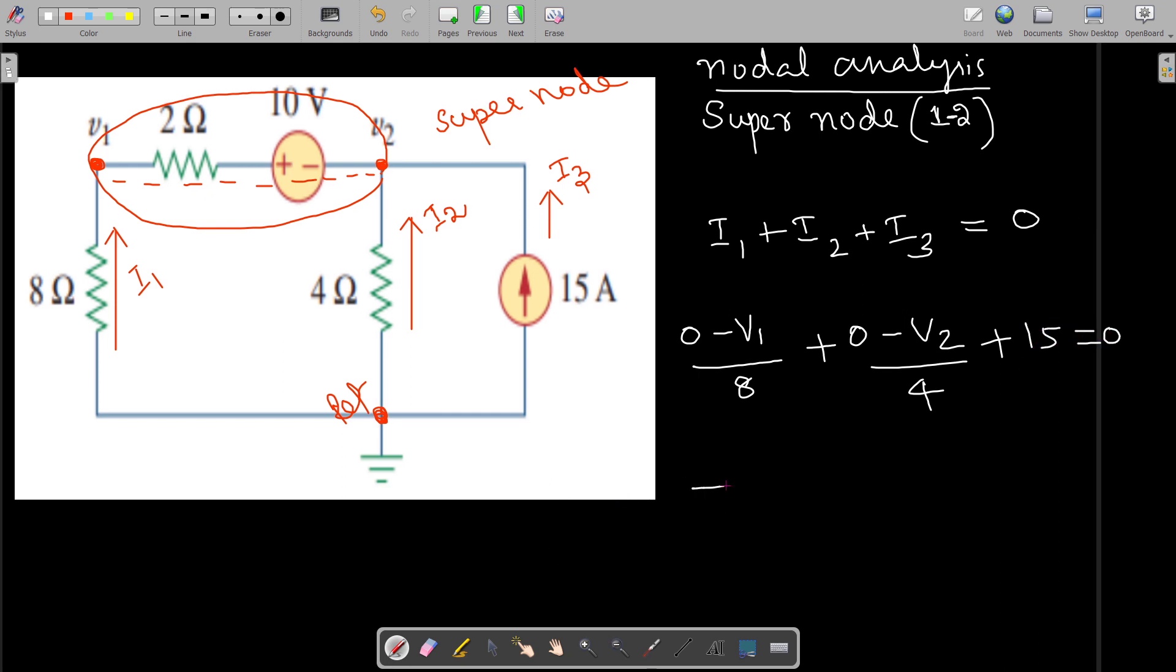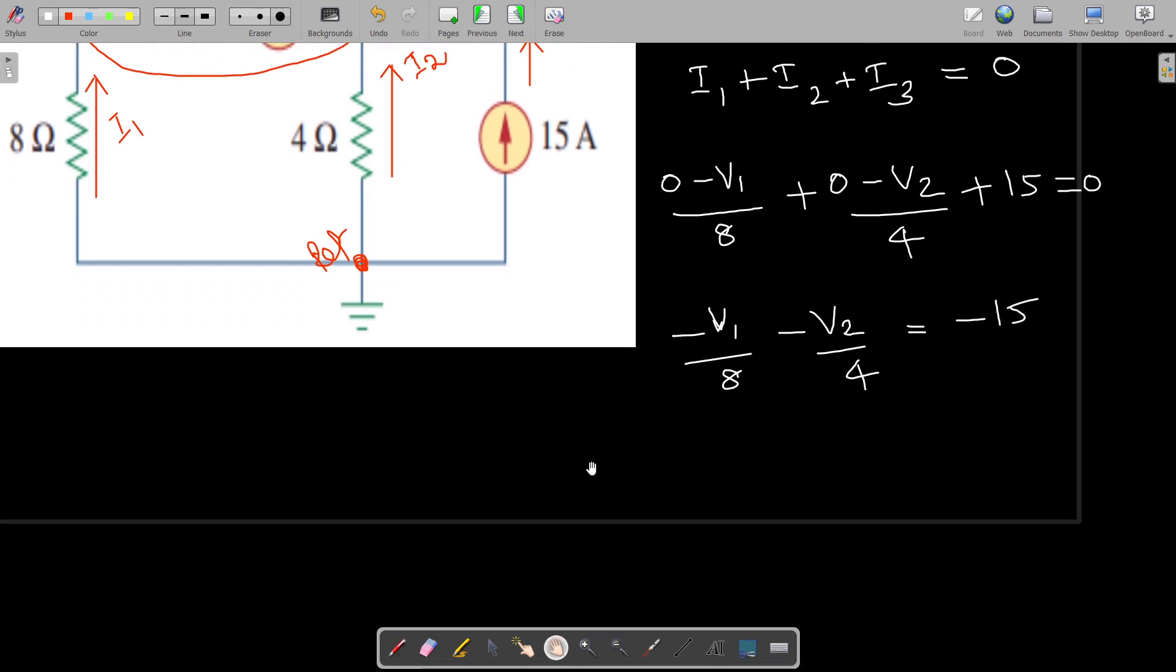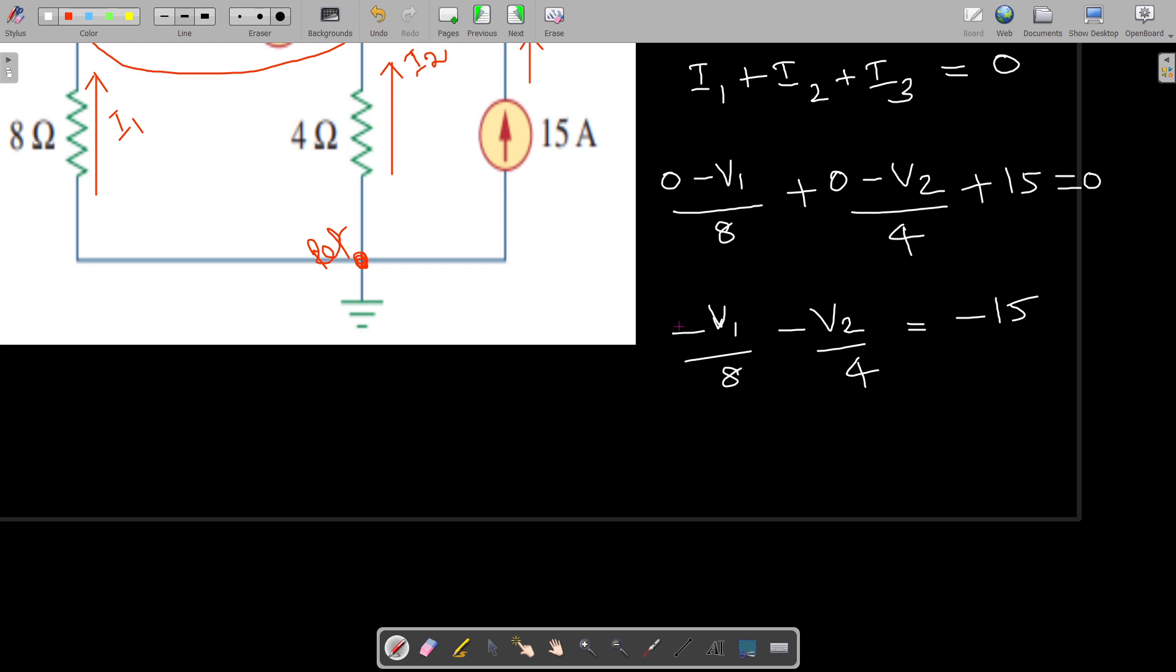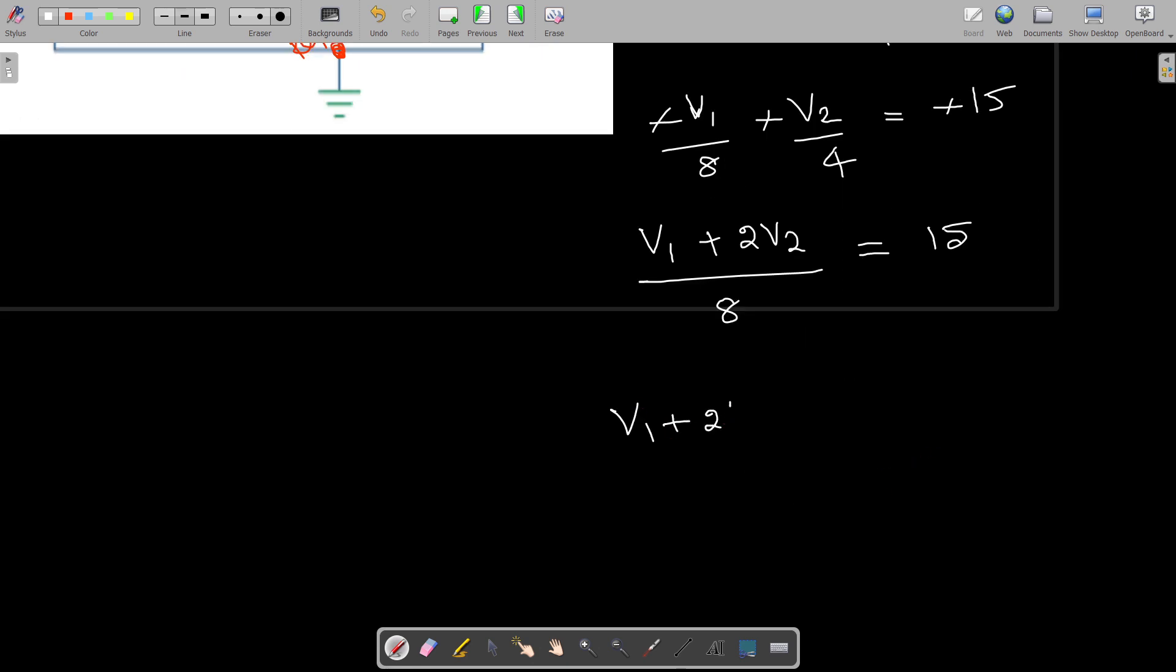So -v1/8 - v2/4 = -15. We can cancel out the minus signs. If I take the common denominator: v1 + 2v2 = 15 times 8, which is 120. So this is our first equation.